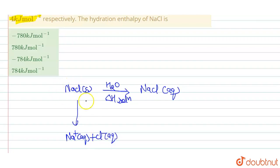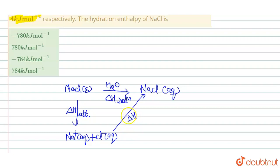NaCl dissociates into Na⁺ aqueous and Cl⁻ aqueous. One mole of NaCl solid breaks into its constituent gaseous ions, Na⁺ and Cl⁻. The energy associated with this step is delta H lattice. When Na⁺ gaseous is converted to Na⁺ aqueous and Cl⁻ gaseous is converted to Cl⁻ aqueous — surrounded by water molecules — the energy released is delta H hydration.